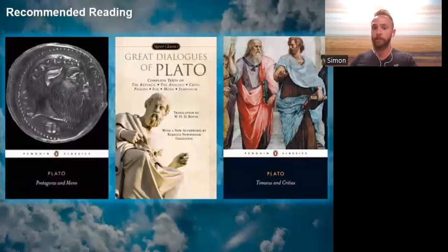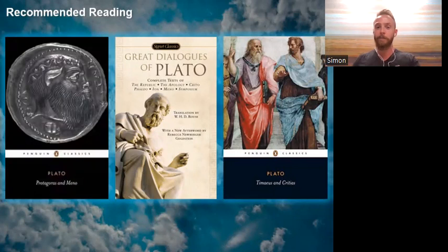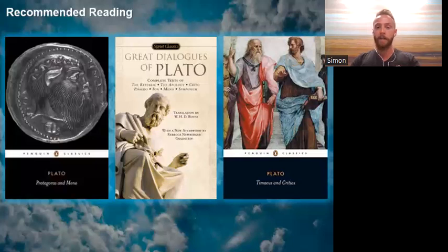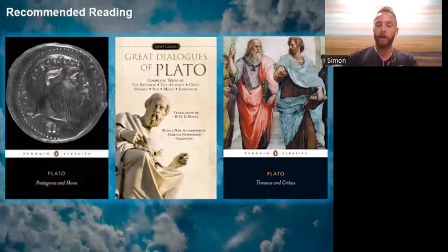The books on screen I can assure you are not imperfect copies of a better book existing somewhere in the realm of the forms. They are: Protagoras and Meno, which sees Socrates humble a very arrogant sophist; the full Platonic dialogues, which includes the Republic amongst others in a very handy and portable copy; and the Timaeus and Critias, which has an intriguing account of the lost continent of Atlantis among other things. Do check these out — you can find them on our catalogue and they're well worth an investment of your time.